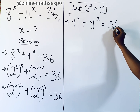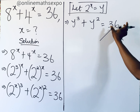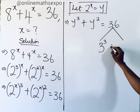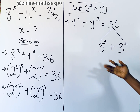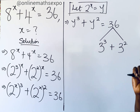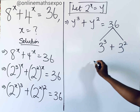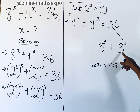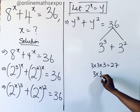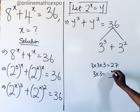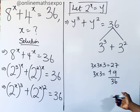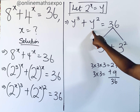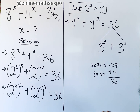We rewrite 36 as 3 to the third power plus 3 to the second power. We know that 3 cubed is 3 multiplied by 3 multiplied by 3, which is 27, and 3 squared is 3 multiplied by 3, which gives 9. Adding these two gives 36. I also chose this because I have y cubed and y squared, so the structure matches.